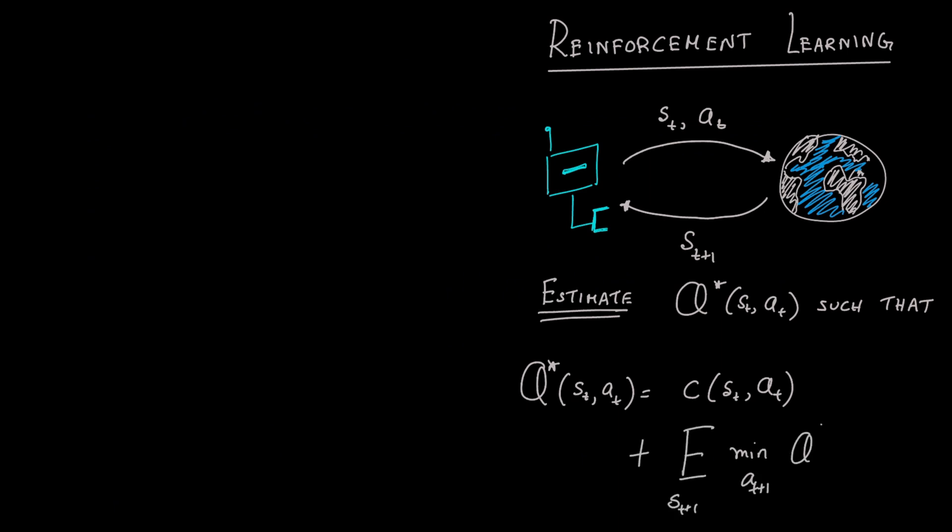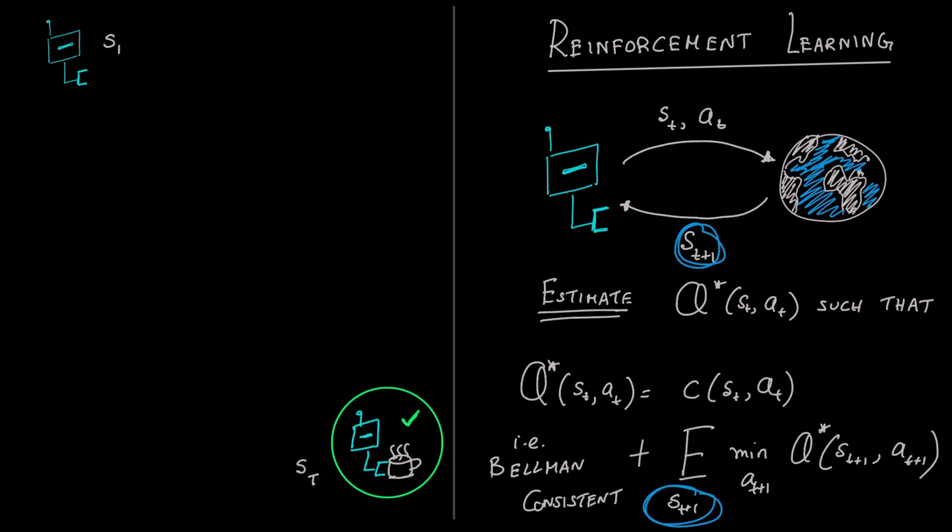The framework of reinforcement learning or RL looks at the interaction of the robot and the world. Assume we know the costs but must interact with the world to learn about transitions. The goal is to estimate the optimal Q function such that it satisfies the Bellman equation. That is, the optimal value is equal to the one step cost plus the optimal value of the next state. Here, the robot starts at an initial state and knows the goal it has to reach. But it does not know the transition function and hence needs to try out all the actions in the world to know the next state.